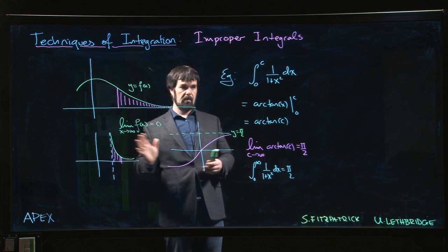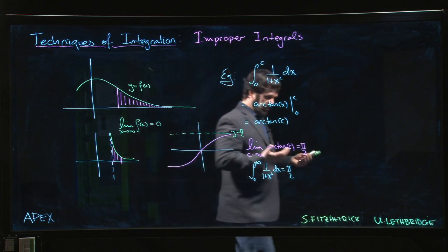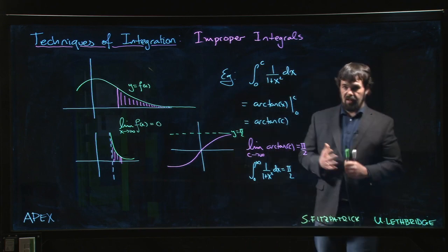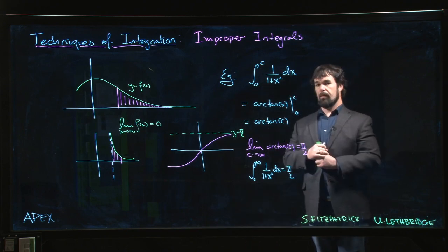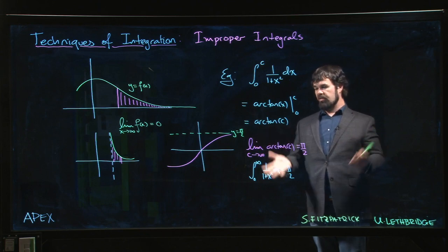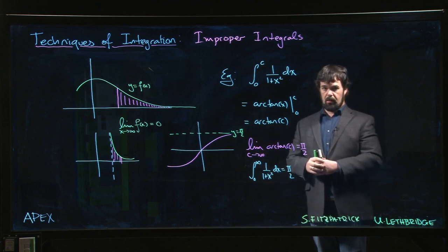We'll encounter a similar idea for vertical asymptotes as well. We'll express the integral in terms of a limit. If that limit exists, then we have an improper integral. We're going to look at a number of examples that illustrate how this idea works.